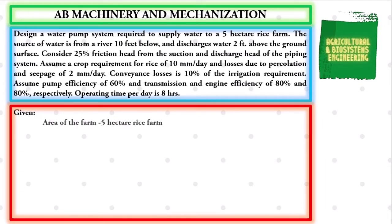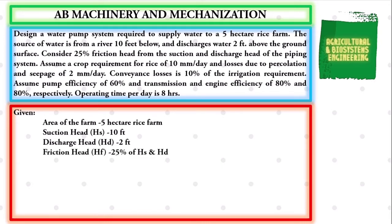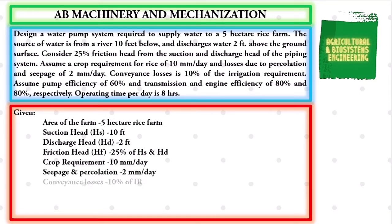We first identify our givens. We have the area of the farm to be 5 hectares; the suction head (HS) to be 10 feet; the discharge head (HD) to be 2 feet; the friction head to be 25% of the suction head and discharge head; the crop requirement is 10 millimeters per day; the seepage and percolation to be 2 millimeters per day; the conveyance losses which is 10% of IR (the irrigation requirement); and the operating time per day to be 8 hours.